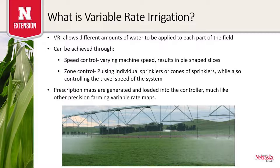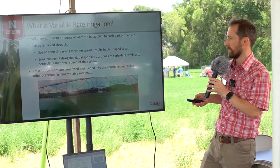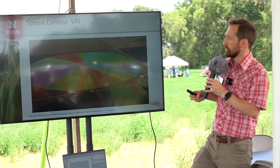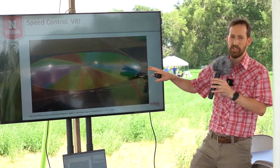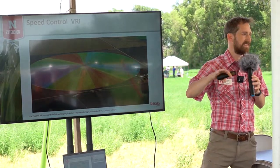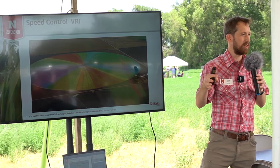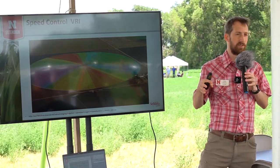We can also generate prescription maps — a map that we want the pivot to perform — and send that to the machine. It will then do that automatically as it goes around the field, so we're not having to control the machine or have someone stand at the panel. These are some visual examples of what these types of prescriptions can look like and the different capabilities of these machines.